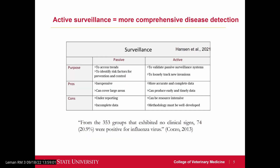That's very useful for monitoring influenza on a national level, but sometimes if you're interested in more comprehensive disease detection at a finer scale, you might want a different technique, which is active surveillance. This just means you're randomly sampling a group of pigs at a fixed interval over a set period of time. In a 2013 study, they analyzed asymptomatic pigs and found that 20% of the samples were actually positive for influenza virus.